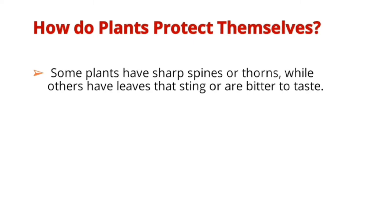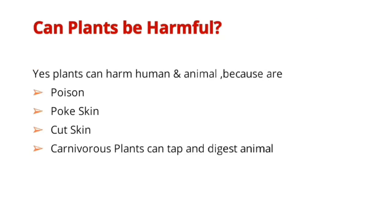How do plants protect themselves? Well, they have sharp spines, thorns, and some of them have a bitter taste. Plants can be harmful — yes, they are poisonous. They can poke your skin, cut your skin. Some of them are carnivorous plants that can trap or digest animals.